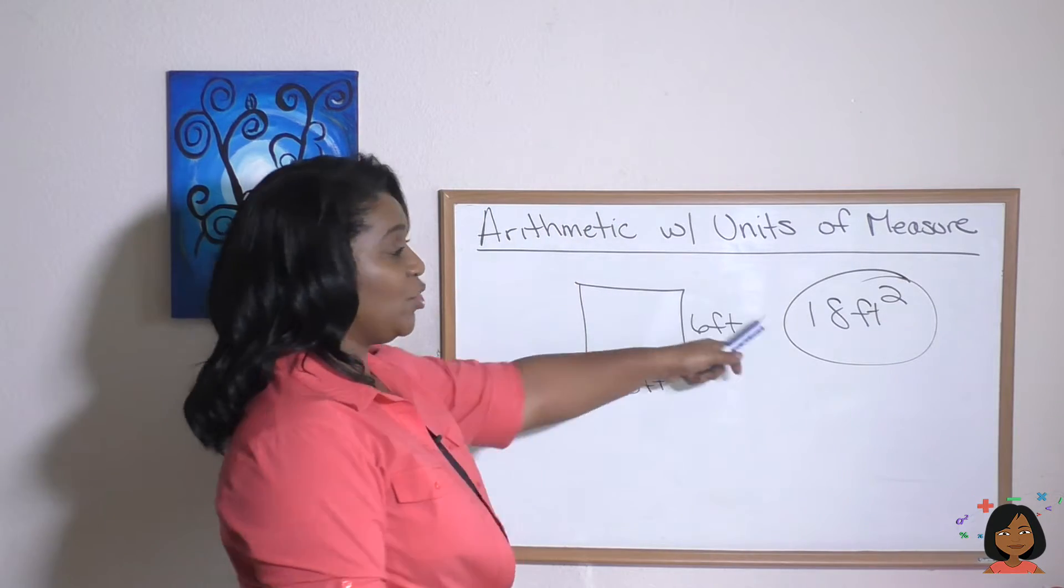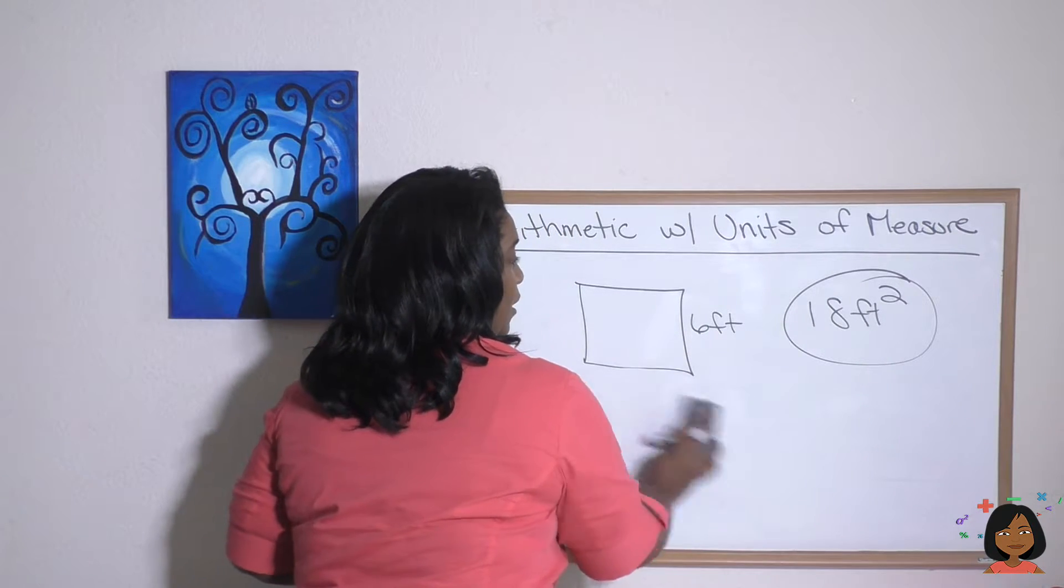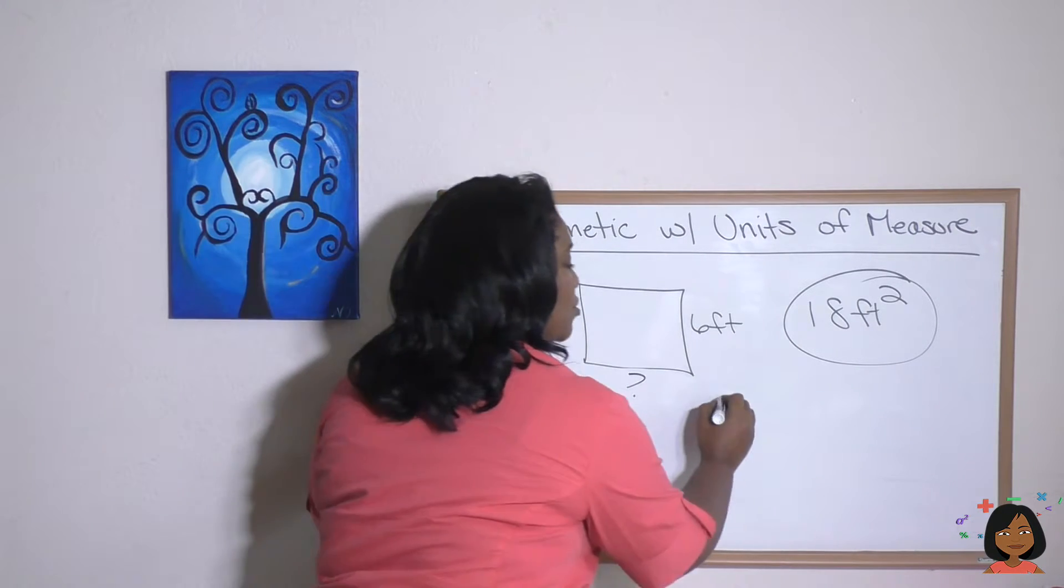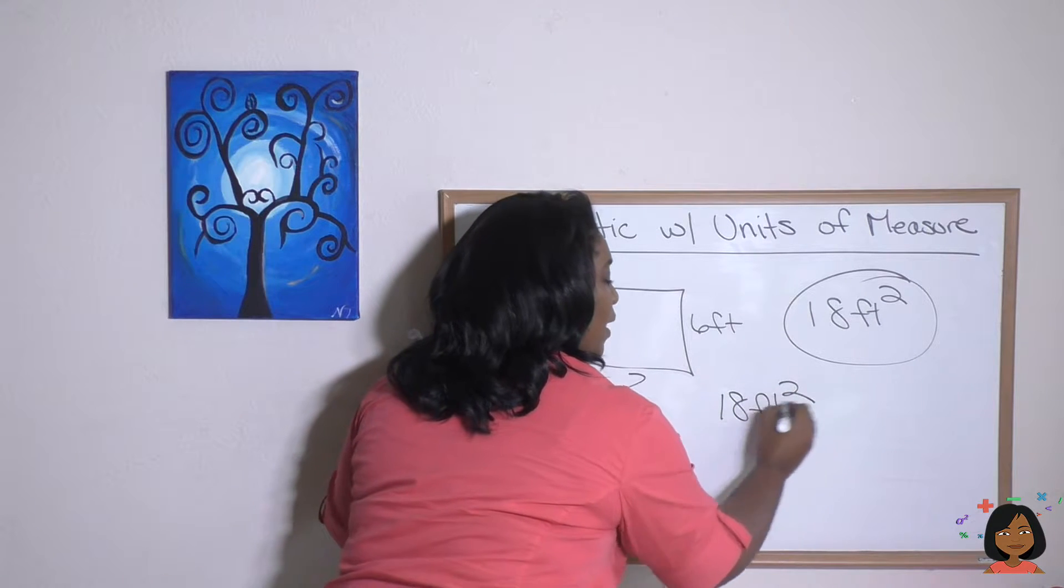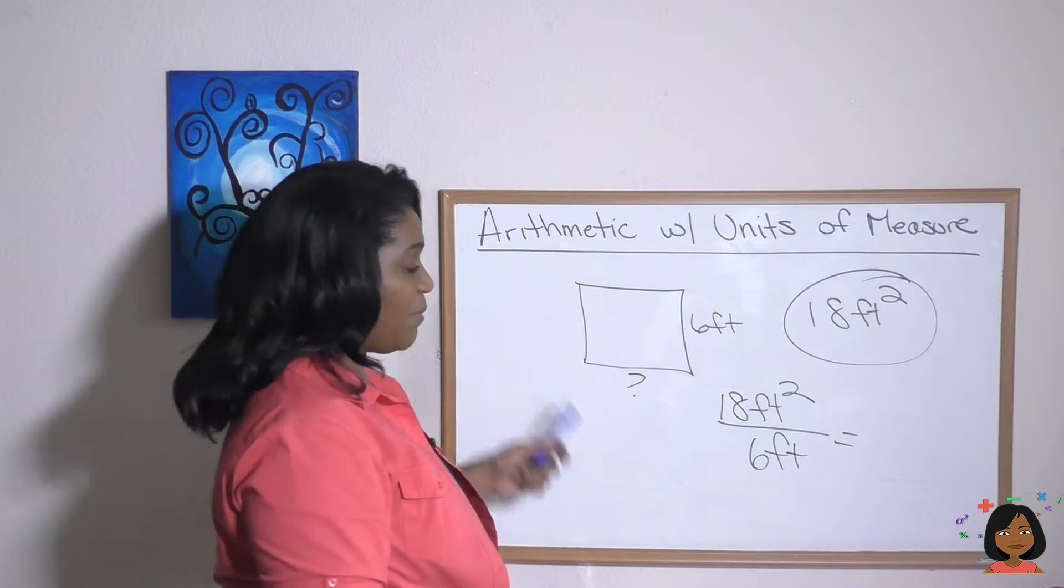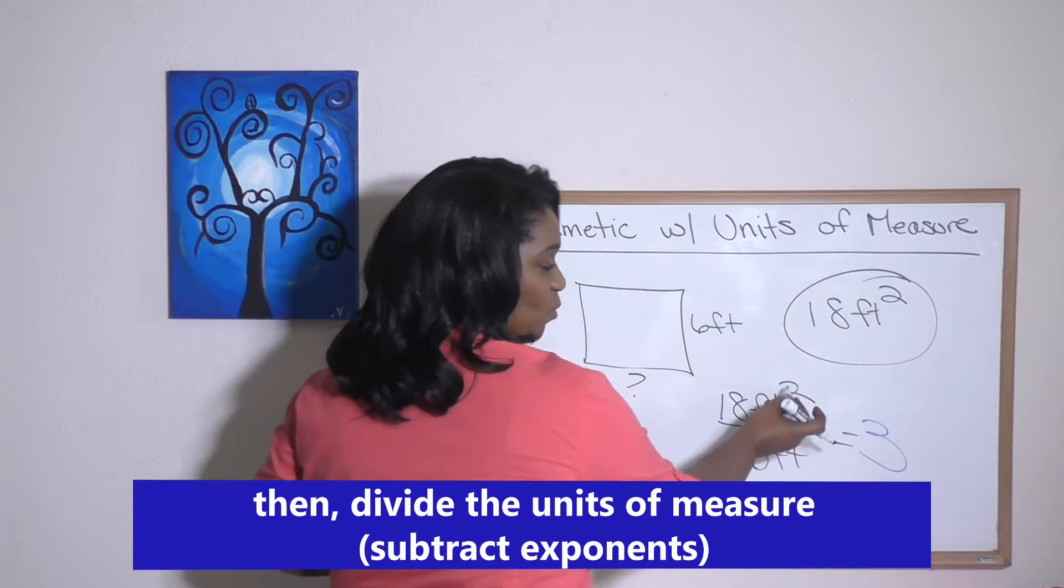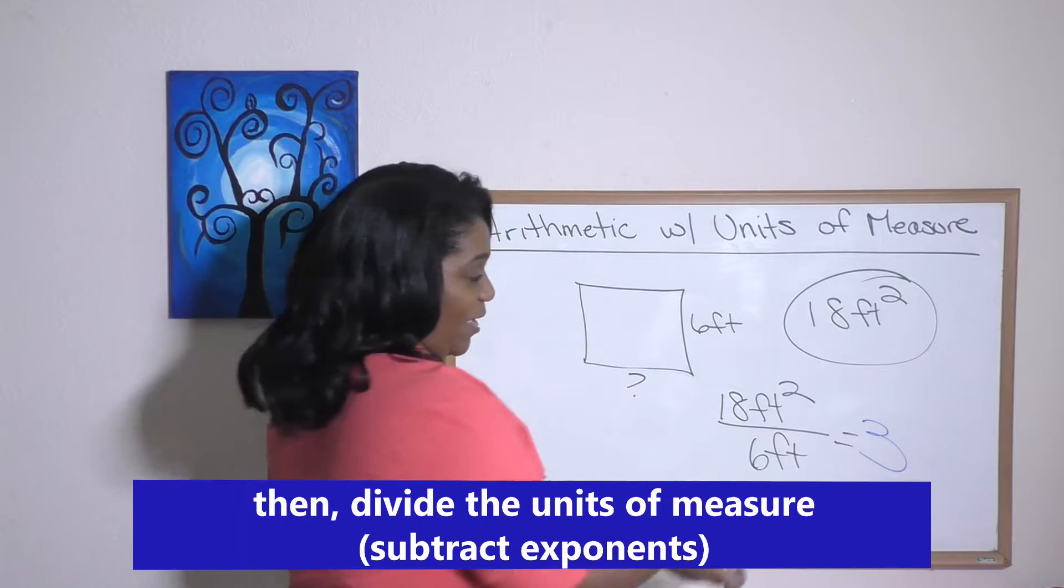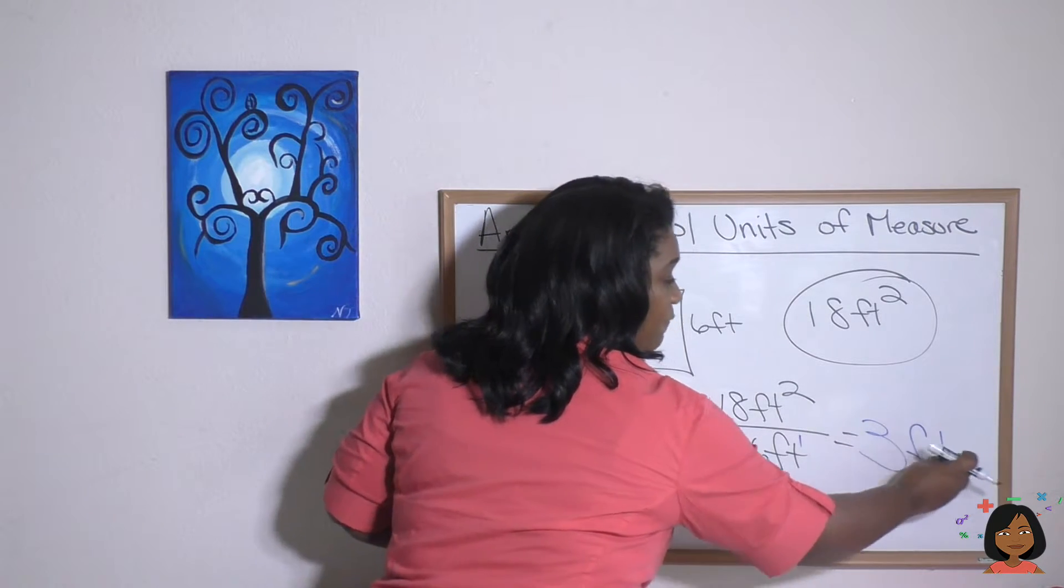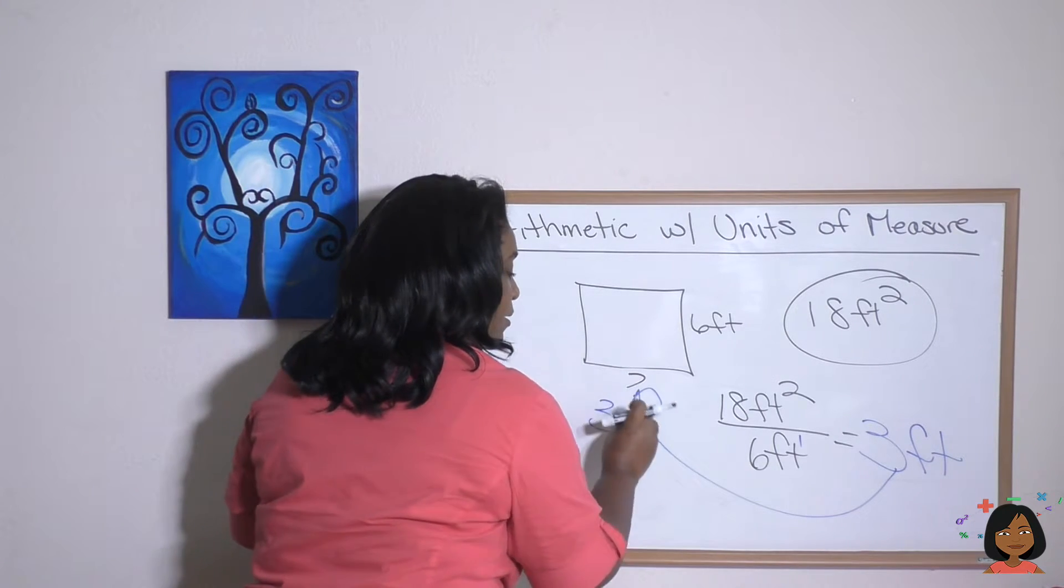Now, what if I knew the area, but I didn't know one of the sides. So I knew my area was 18, but I did not know what this bottom side was. That's a division problem, right? So we'd have to do 18 feet squared divided by six feet. And we can do our math. 18 divided by six is three. But then we have feet squared divided by feet. It means we subtract these exponents, right? Two, and this is a one here. I know you can't see it, but it means we're going to be left with just feet, which tells you that the length of this side is going to be three feet.